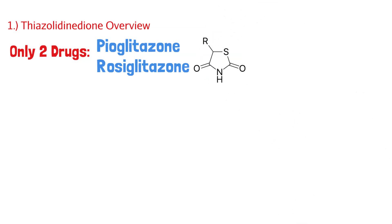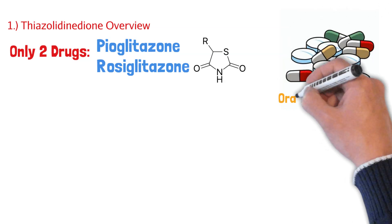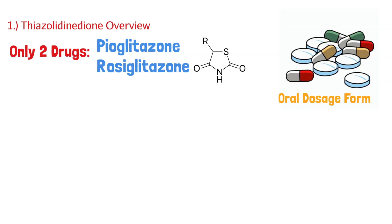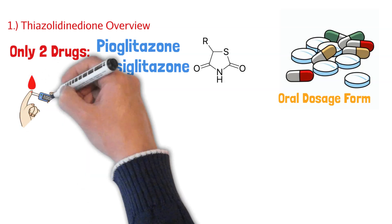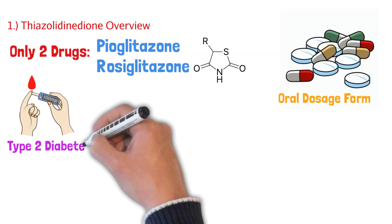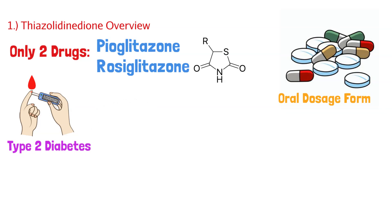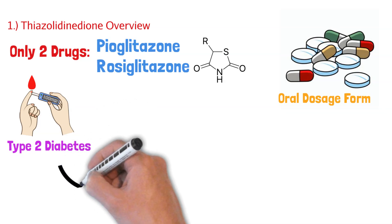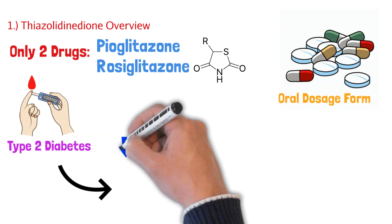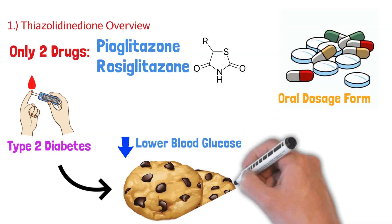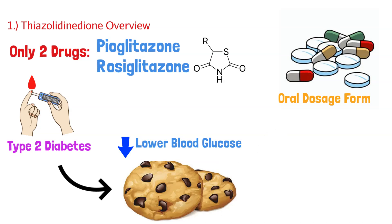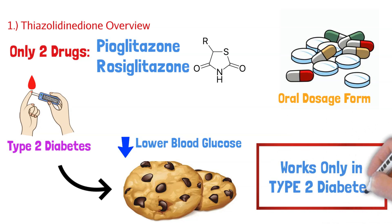Where this drug class gets its name is from this structure right here — this ring. This is a thiazolidine ring. These are oral medications, and that's important because these medications help us treat type 2 diabetes. Anytime you talk about diabetes, you want to know what's oral and what's injectable. The whole goal of type 2 diabetes medication management is to lower blood glucose levels. And a key thing to note is it only works in type 2 diabetics — you don't use this in type 1.